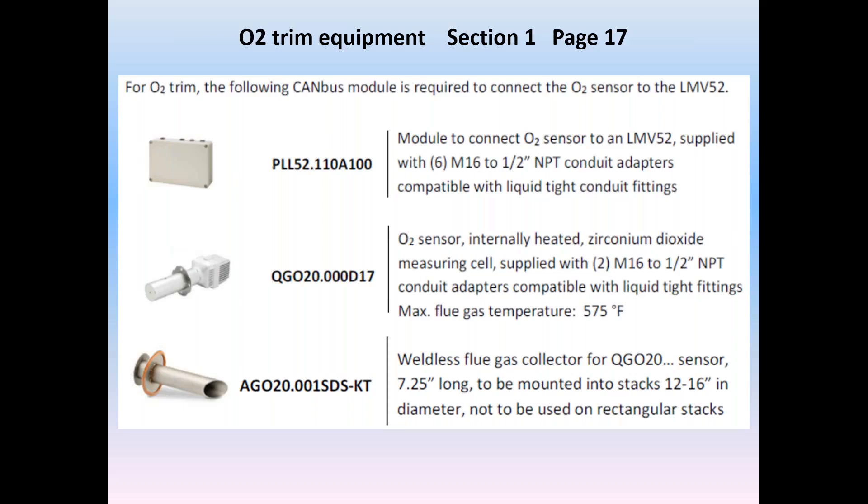Next is the O2 sensor itself, the QGO, suitable for natural gas or light oil. A QGO 21 is also offered for heavy oil. O2 is not suitable for digester gas operation. Third, the last element, is a collector, the AGO. It gets welded into the stack and holds the QGO oxygen sensor. A great option offered by SCC is a weldless collector. This features a gasket and the mounting hardware.